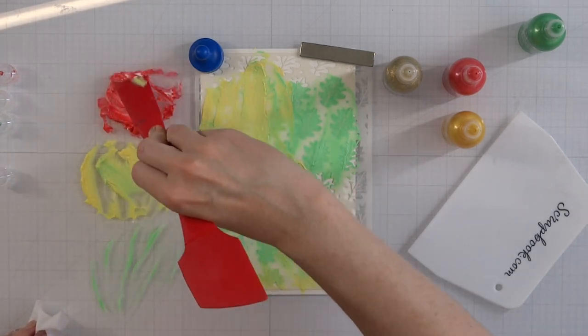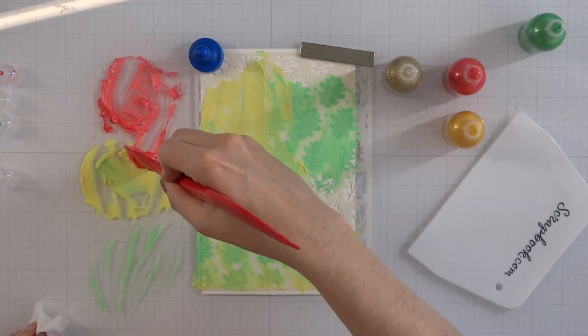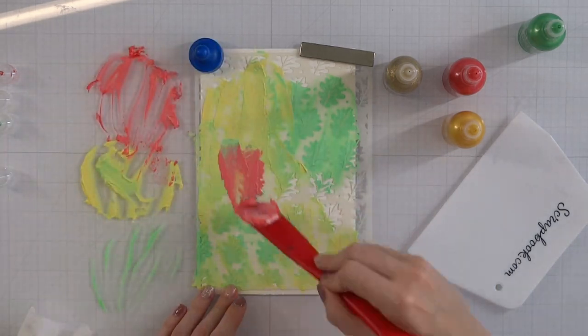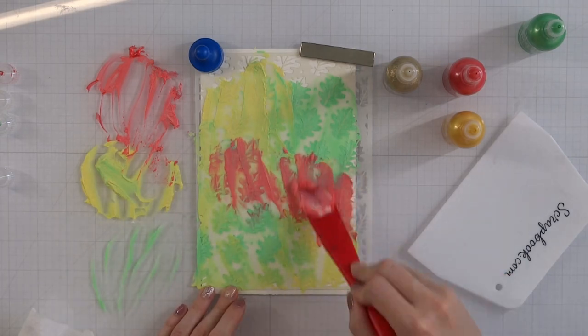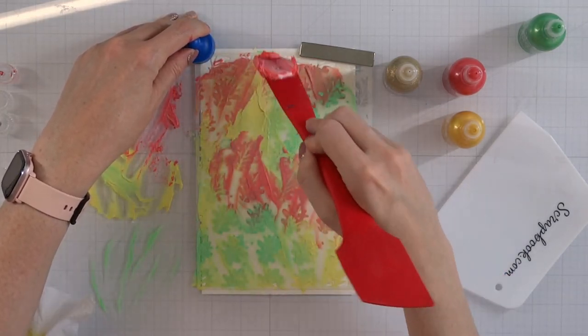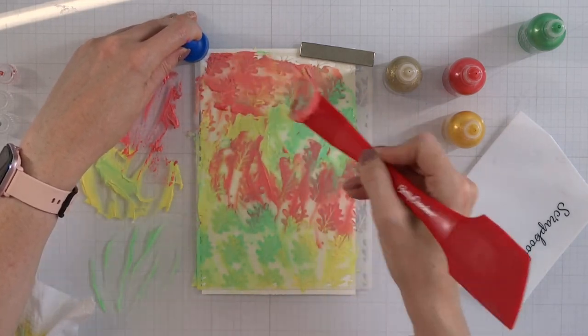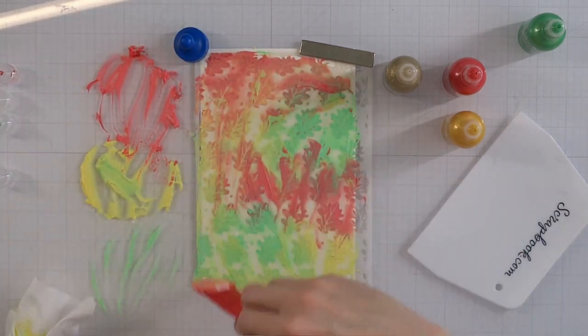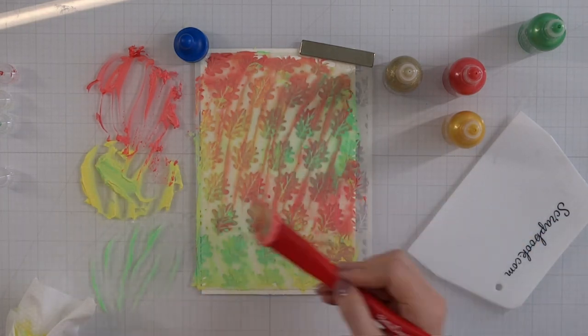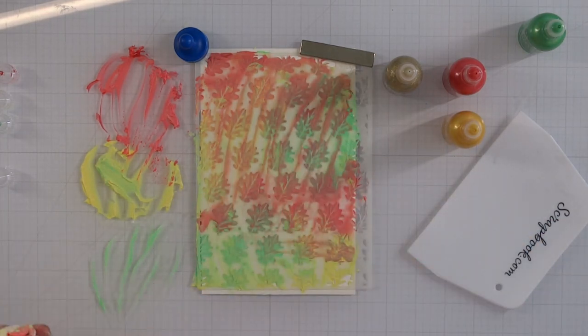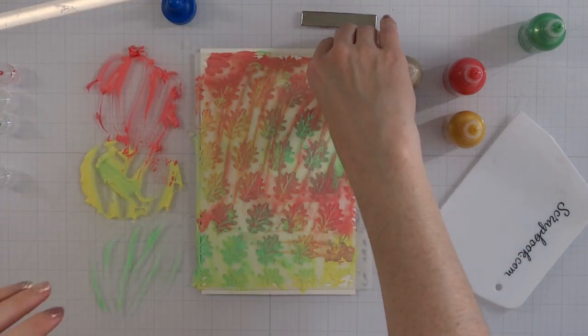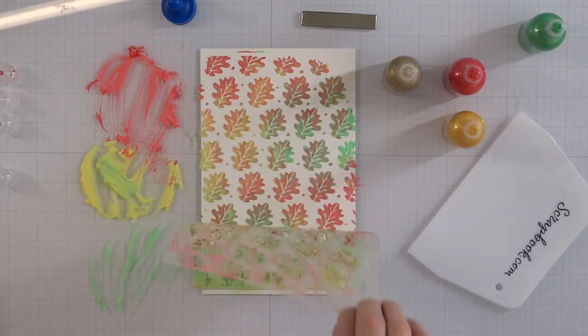I'm just mixing it up and getting a nice consistency. I probably could have used a little more white embossing paste to get more product, but here I am adding the last color. I even mixed some yellow to get an orange hue. It looks like a hot mess right now, but that's okay because we're going to do the big reveal.